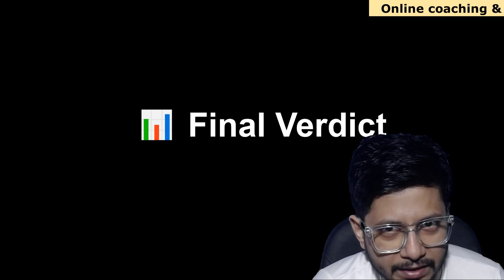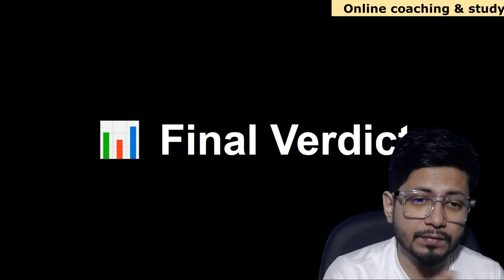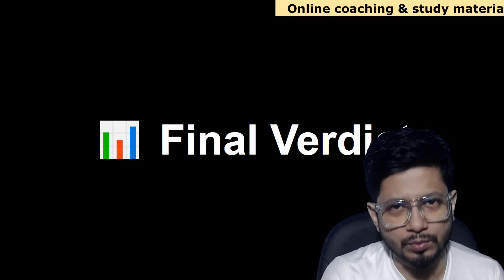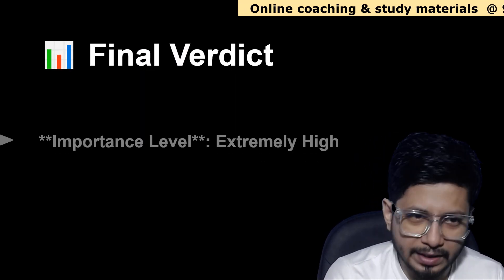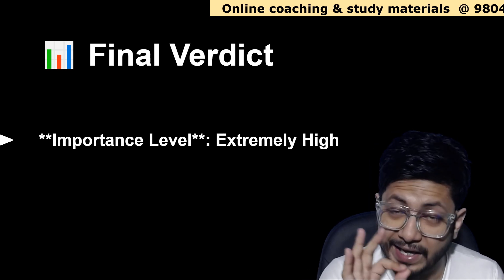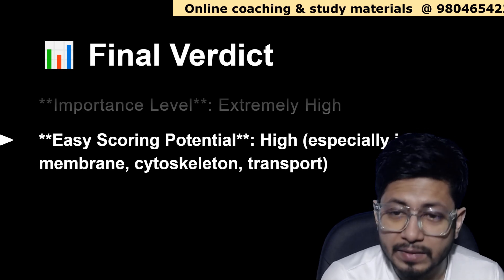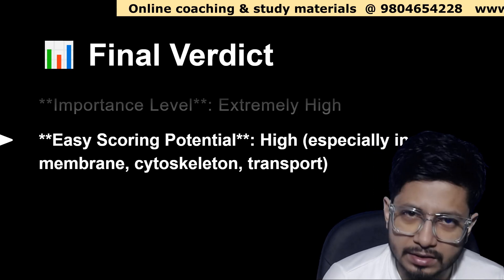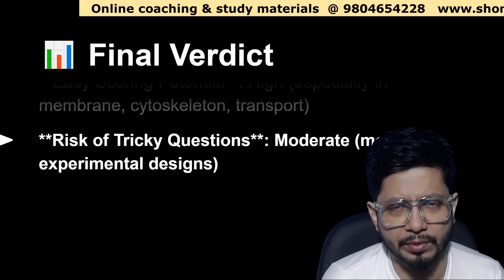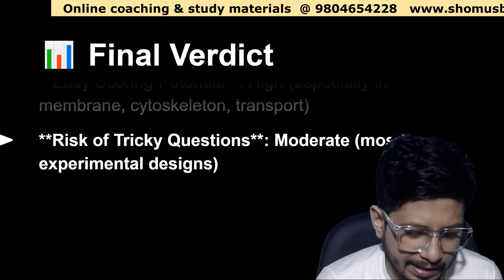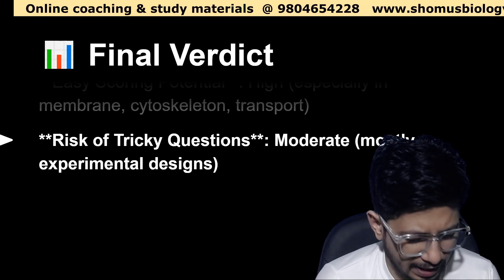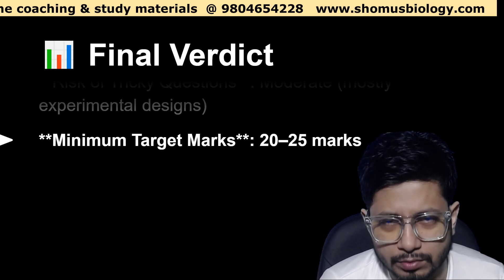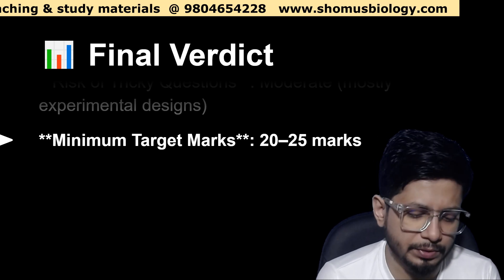Let's start with the final verdict. We'll first understand the overall concept of how to prepare unit two cell biology, then move to the different topic list. The importance level of cell biology is extremely high. High scoring potential, especially in membrane, cytoskeleton, and transport. Risk of tricky questions is moderate — mostly experimental and design-based questions — but most questions are easy and memory-based. Minimum target marks: 20 to 25.